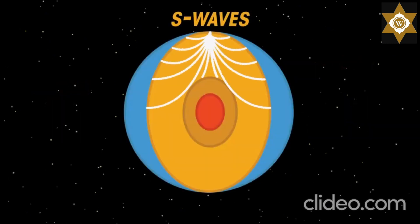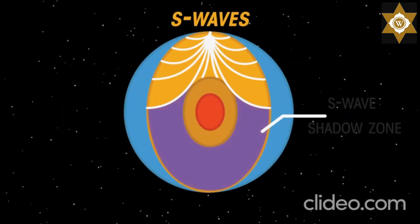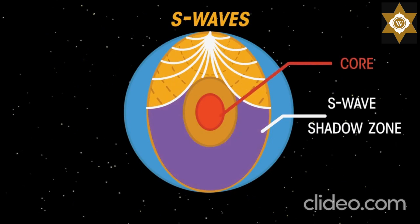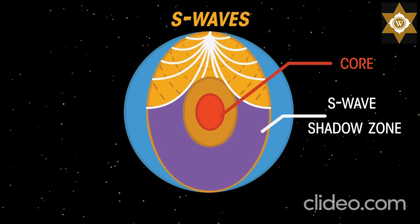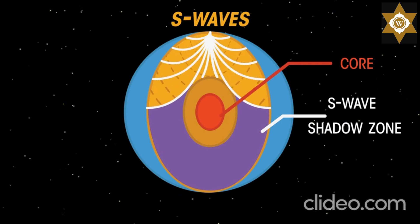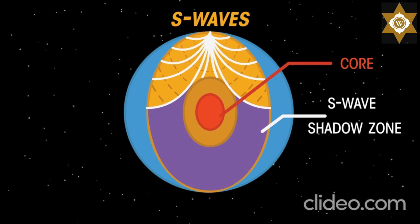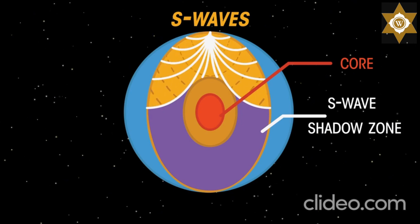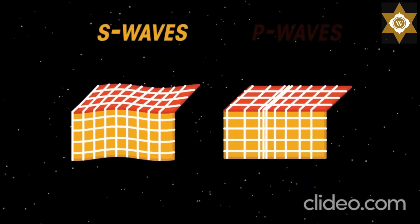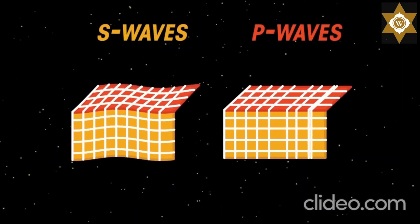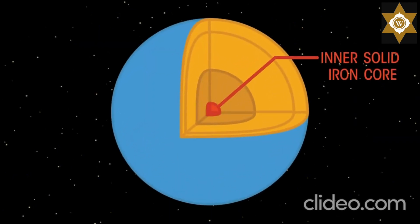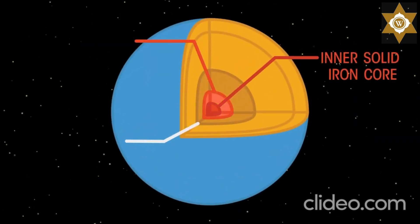S waves have a much larger shadow zone, suggesting there is a liquid iron structure deep in the earth they cannot travel through. Calculations can then be done to deduce the relative sizes of the layers hidden deep inside the earth and determine if they are liquid or solid. In conclusion, study of S and P waves led us to the knowledge that the earth has a layered structure, with a solid inner core surrounded by an outer liquid core.